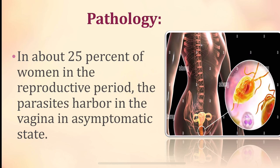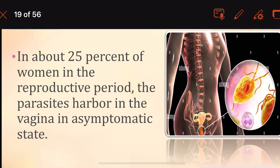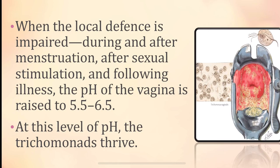Regarding pathology, in about 25% of patients in the reproductive period, the parasite harbors in the vagina in an asymptomatic state. The healthy vaginal pH is around 3.8 to 4.5, maintained by lactobacilli species which produce the acidic pH and kill other bacteria entering the vagina.